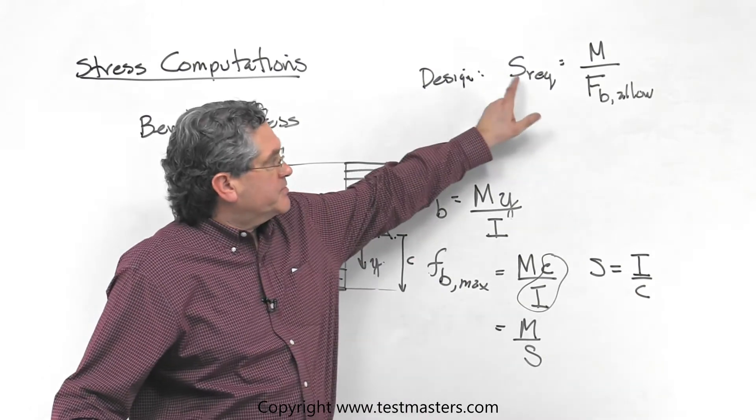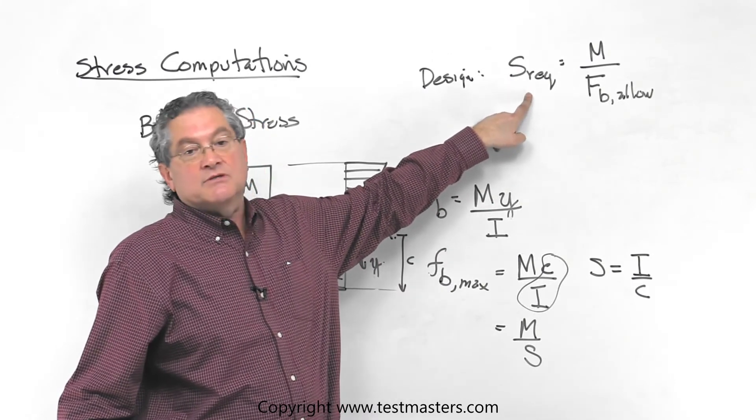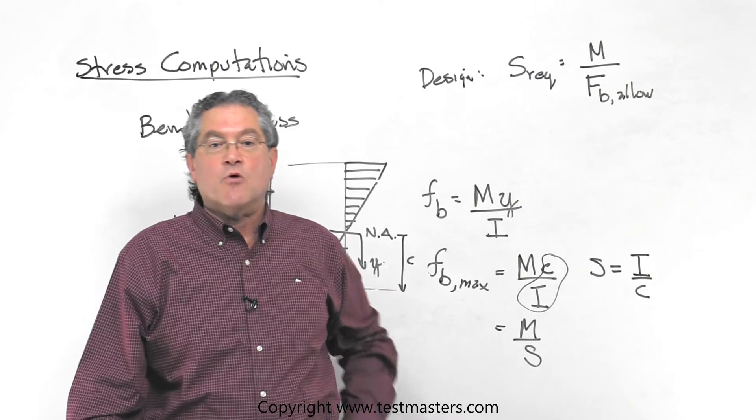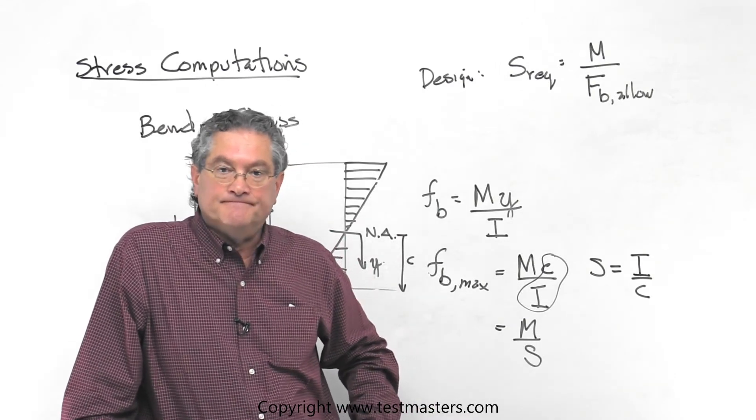And so we go through and pick out a cross section that has a section modulus that is at least as large as the required value. So if we do that, we've got a valid design.